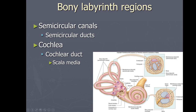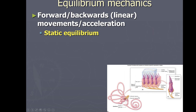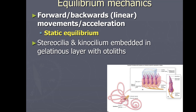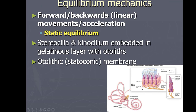Long story short: the vestibule and semicircular canals are used in equilibrium; the cochlea is used in hearing. Focusing on the vestibule, the macula inside it is loaded with hair cells. On top of the macula there's a gelatinous layer like jello containing little calcium crystals called otoliths. That gelatinous layer is called the otolithic membrane or statoconic membrane.